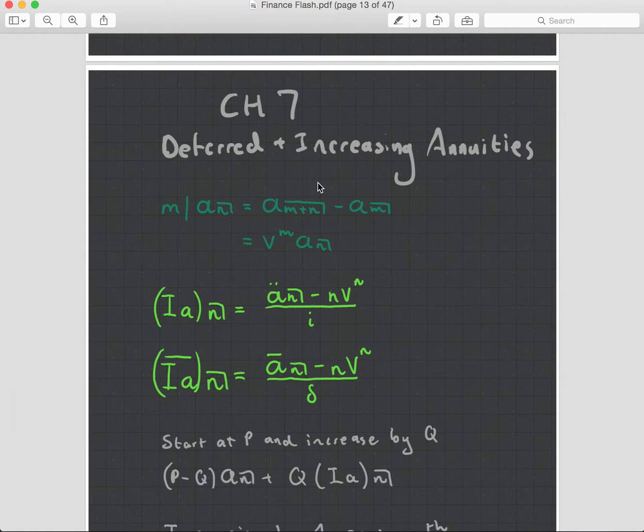So Deferred and Increasing Annuities. A deferred annuity is an annuity that you take out, but it doesn't start paying right away. Remember, we had the annuities in advance, which as you activate them, they pay immediately, and then the first of the month thereafter.